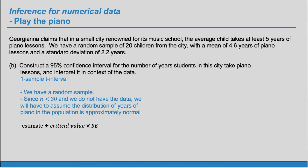When making a confidence interval, it always has this general structure: your estimate plus or minus the critical value times the standard error. Here our estimate is x-bar, the sample average. The critical value is t-star, and the standard error is s over the square root of n. Plugging in, we use 4.6 for x-bar, our sample standard deviation and n. The degrees of freedom is n minus 1, which is 19.